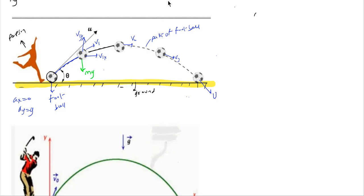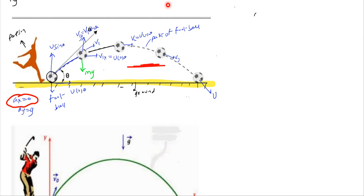The horizontal component of velocity should remain the same — it equals u cosθ. The vertical component u sinθ will keep on changing. The horizontal component remains constant because there is no acceleration along x — there is no force acting on the ball along the x-axis.